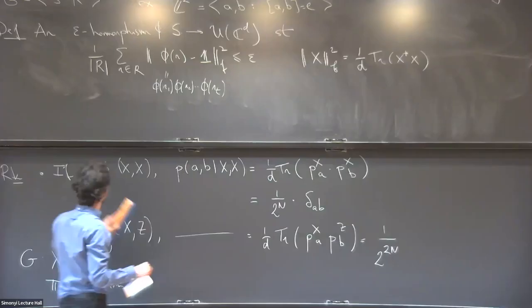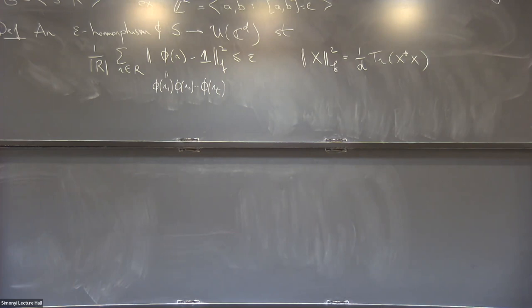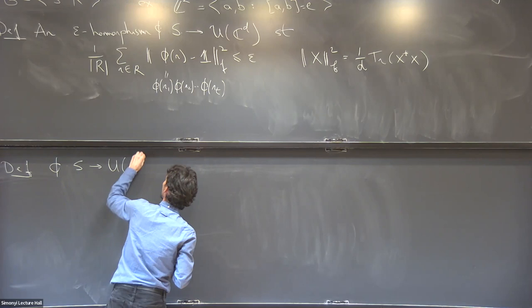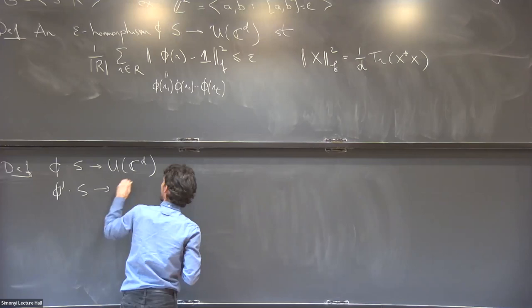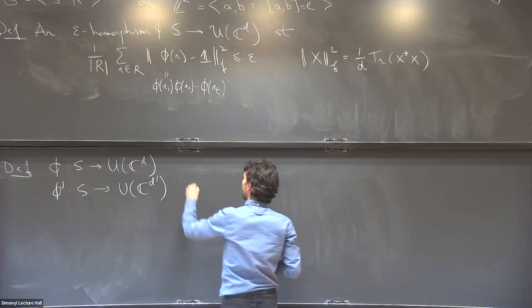Before defining stability, I need the notion of closeness between different maps. If I take two maps — the first from generators to unitaries in D dimensions, the second to unitaries in D-prime dimensions — I say these are delta-close if there exists an isometry from C^D to C^(D-prime) such that on average over generators, the maps send generators to unitaries that are close up to conjugation by the isometry.